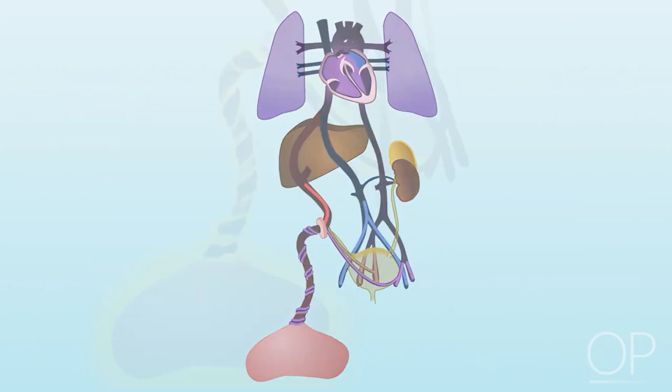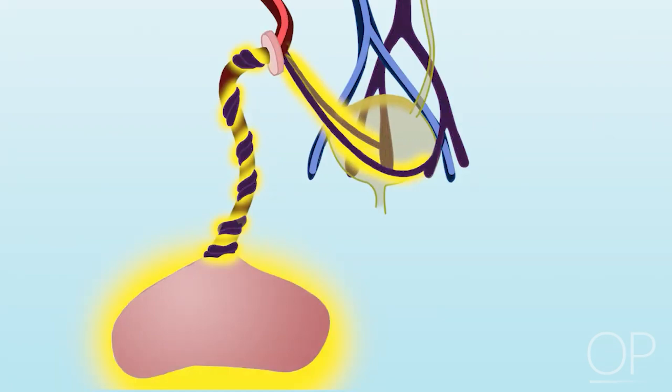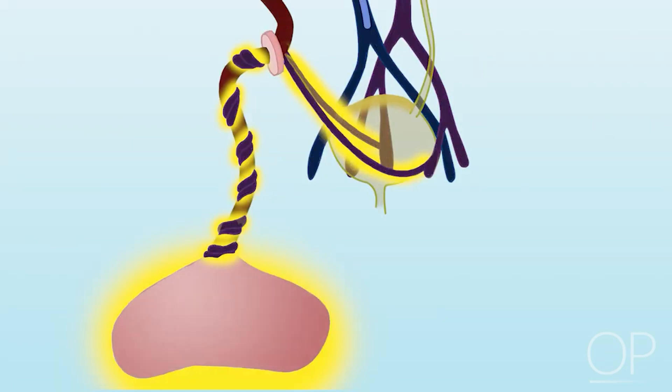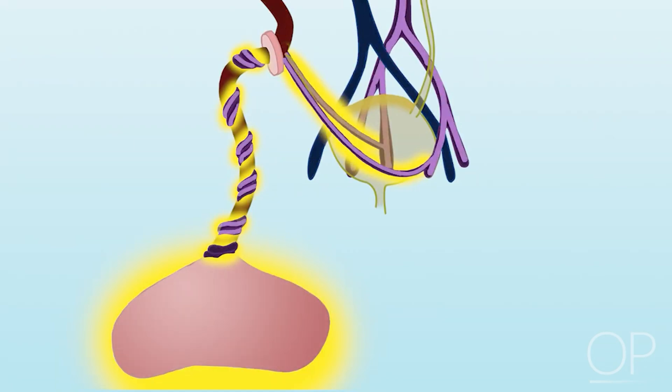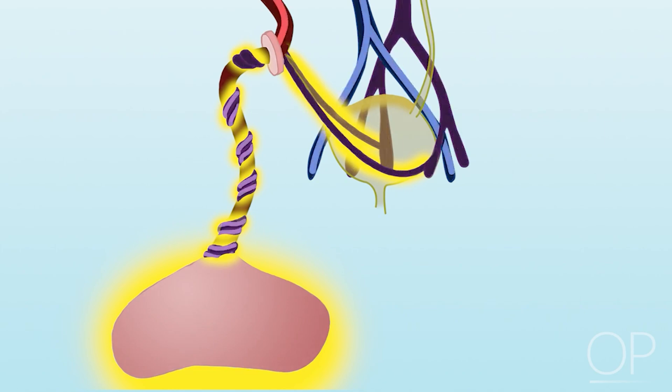The umbilical arteries allow blood to flow from the body back to the placenta to be enriched with oxygen and nutrients.